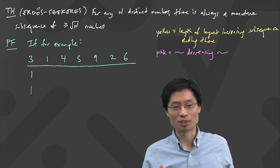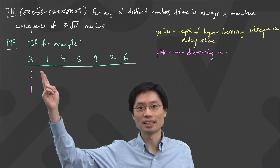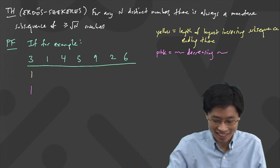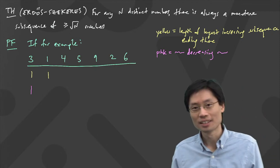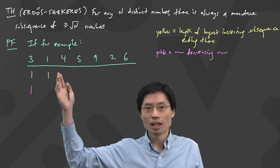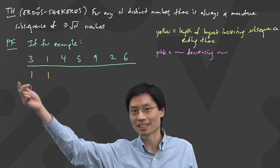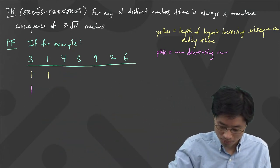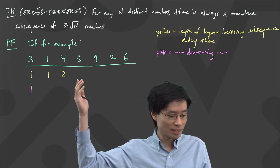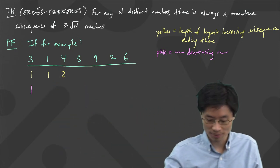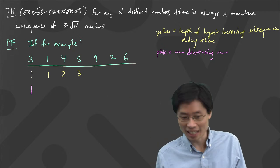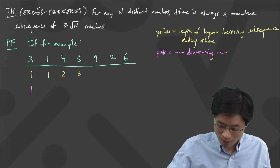Why am I doing this? Let's just start doing it. The length of the longest increasing subsequence that ends at the one is just one. What's the length of the longest increasing subsequence that ends at the four? I can get there by going from one to four, or from three to four, so that's two. How about for the five? The longest increasing subsequence ending at five is 1, 4, 5 — that's three. And for the nine: 1, 4, 5, 9 — so there are four in that length.